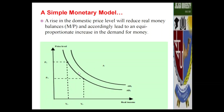A rise in the domestic price level will reduce the real money balance, which is M over P. If the price level increases from P1 to P2 with income from Y1 to Y2, this leads to an equivalent or proportionate increase in the demand for money.